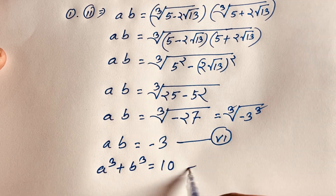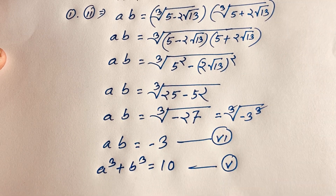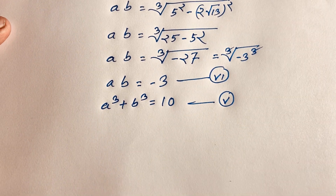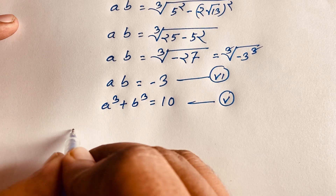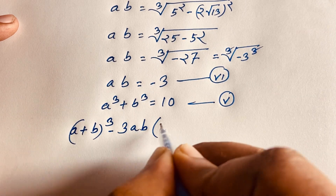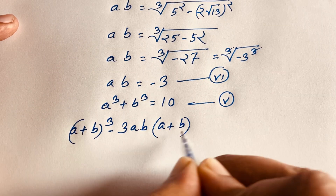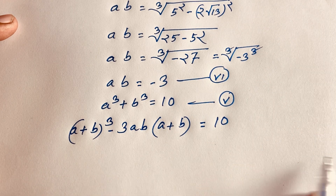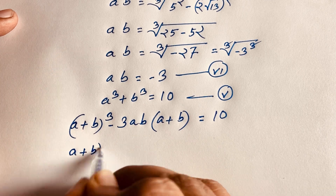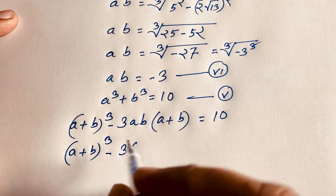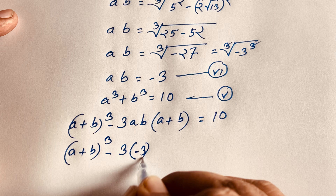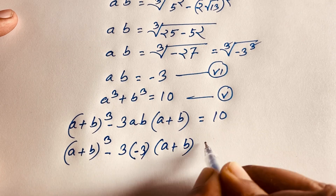Now we look at a³ plus b³. According to the sum of cubes formula, a³ plus b³ equals (a plus b)³ minus 3ab times (a plus b), and this equals 10 — our fifth equation. Substituting our sixth equation, ab equals negative 3, we get (a plus b)³ minus 3 times (negative 3) times (a plus b) equals 10.